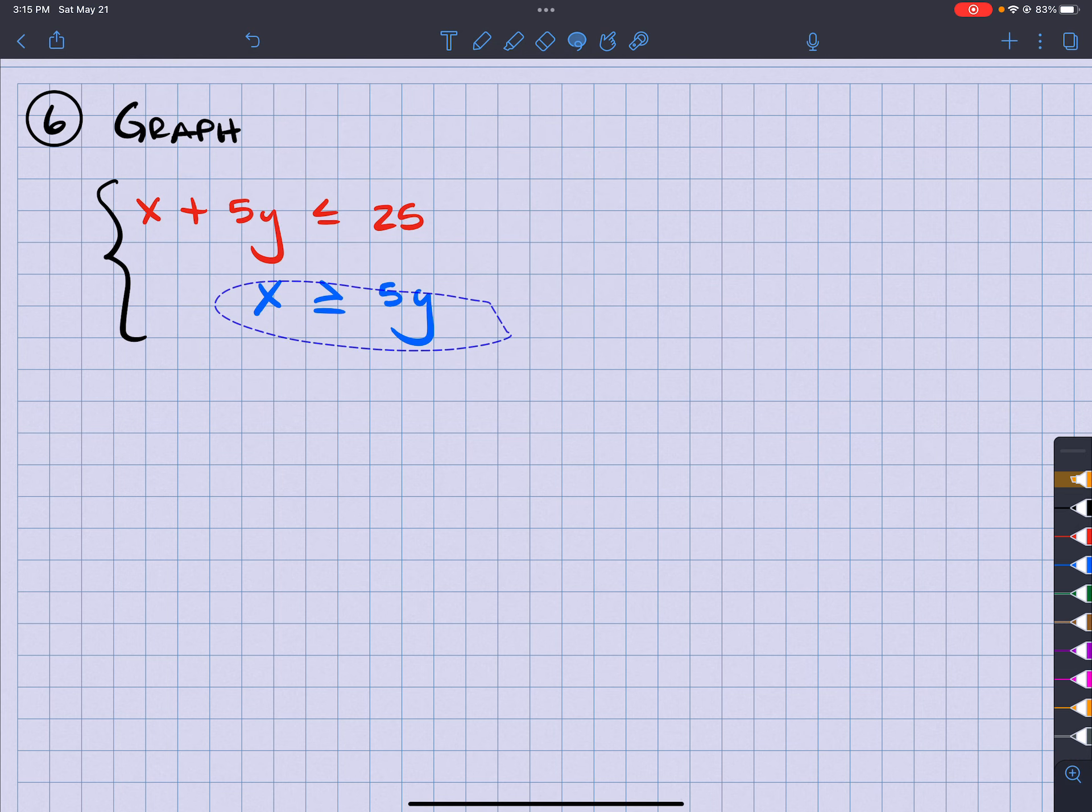Alright, so what I know is that the red has a solid line, mainly because of that piece right there. Okay.